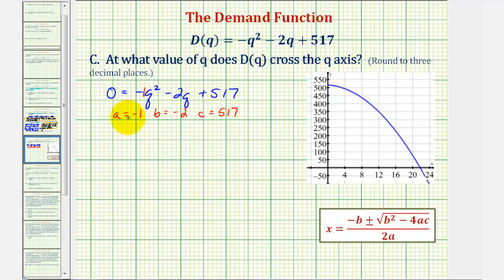So using the quadratic formula, instead of X, we'll have Q equals negative B, or negative negative two, plus or minus the square root of B squared, that's negative two squared, minus four times A, which is negative one, minus one times C, which is 517, divided by two times A, or two times negative one.